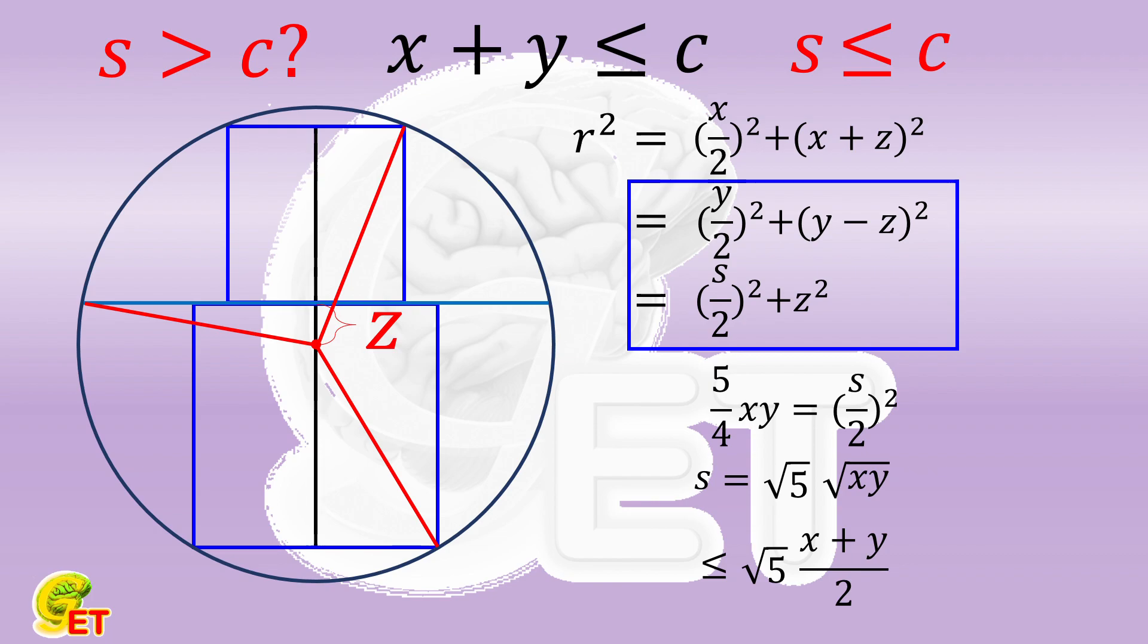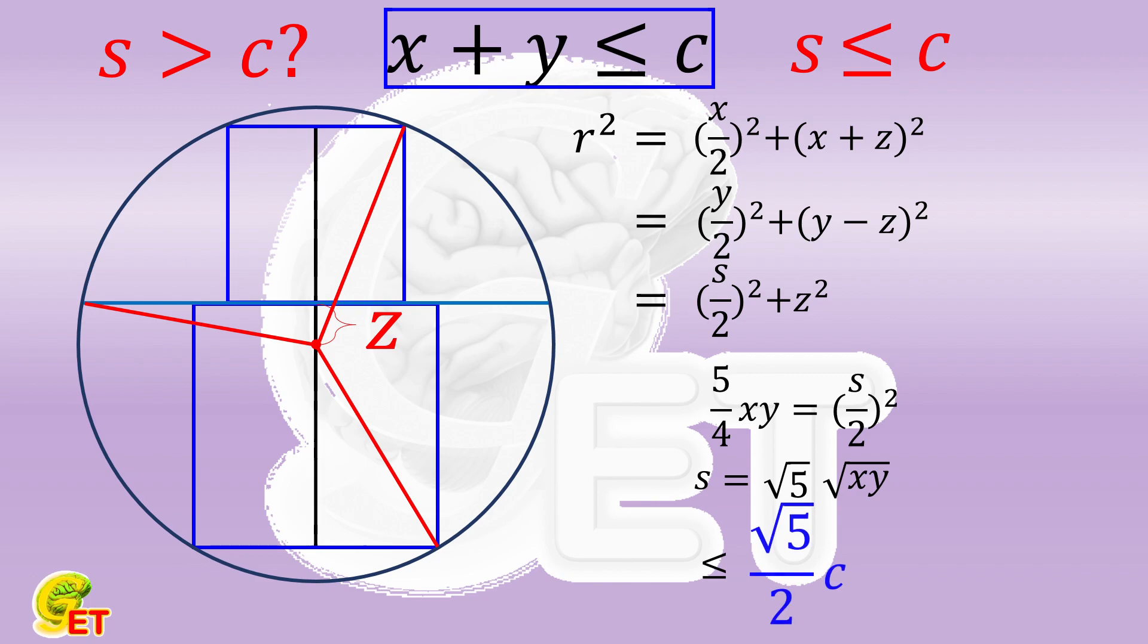Then according to that, the maximum value of x plus y is c. We obtain that, in this case, the maximum value of s is half the square root of 5 times c. It is also indeed bigger than c. So this is the final answer.